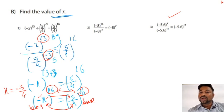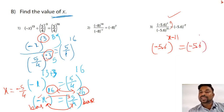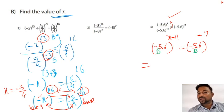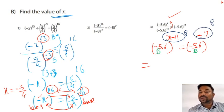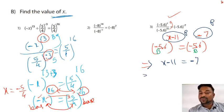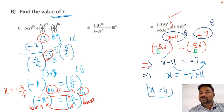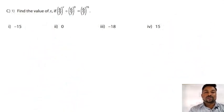For the next one, we don't know which power is bigger or smaller, so straight away bring 11 to the top. We get minus 5.6 to the power x minus 11, equals minus 5.6 to the power minus 7. The base is minus 5.6 on both sides — so power equals power: x minus 11 equals minus 7. Send minus 11 to the other side: x equals minus 7 plus 11, so x equals 4.